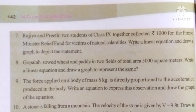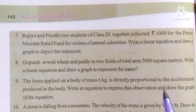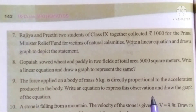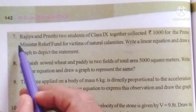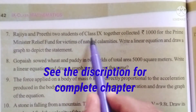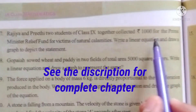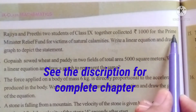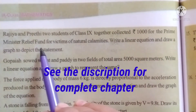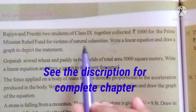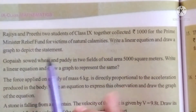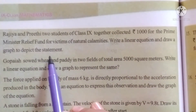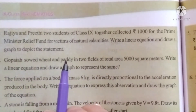Hello students, welcome to my channel. Today in this video we are going to see exercise 6.3, problem 7. Rajia and Preeti, two students of class 9, together collected rupees 1000 for the Prime Minister Relief Fund for victims of natural calamities. Write a linear equation and draw a graph to depict the statement. So here two students are there, they collected 1000 rupees.